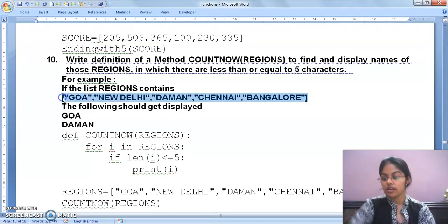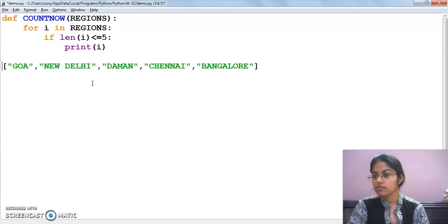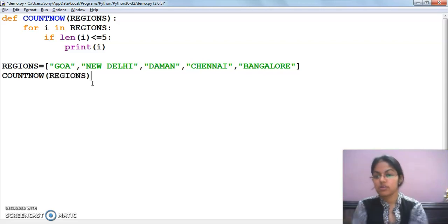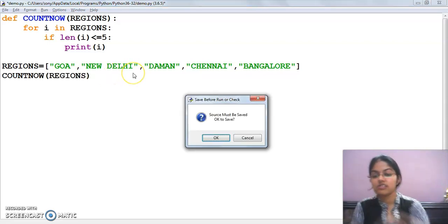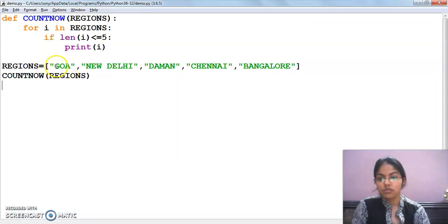I am going to call the function now, that is count_now, and in bracket name of list, that is regions. So let's execute this. Now see the answer, GOA and DAMAN. Let me check, this has three characters, this has more than five. DAMAN has one, two, three, four, and five. We gave condition less than or equal to five, so five qualifies. CHENNAI has more than five, one two three four five six seven, and Bangalore also is containing more than five characters.